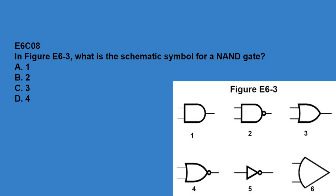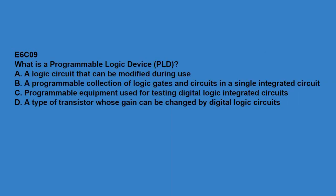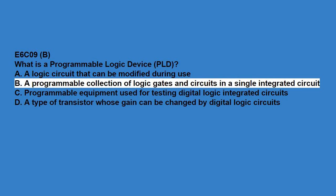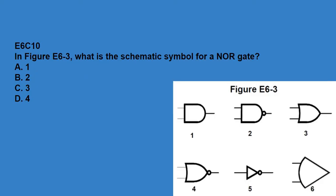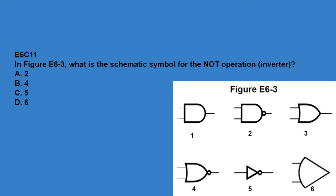E6C08: in figure E6-3, what is the schematic symbol for a NAND gate? Answer is number two. E6C09: in figure E6-3, what is the schematic symbol for a NOR gate? Answer is number four. E6C11: in figure E6-3, what is the schematic symbol for the NOT operation inverter? Answer is number five.